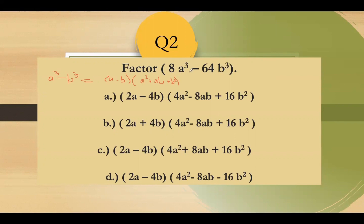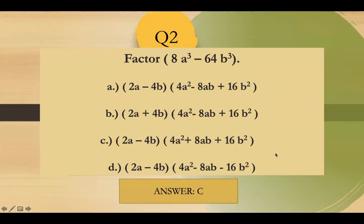The cube root of 8 is 2a, and the cube root of 64 is 4b. So the binomial is 2a minus 4b. Then square the first term: 2a squared is 4a squared. Change the sign to plus. Multiply the first and second: 8ab. Then square 4b to get 16b squared. So the answer is letter C.